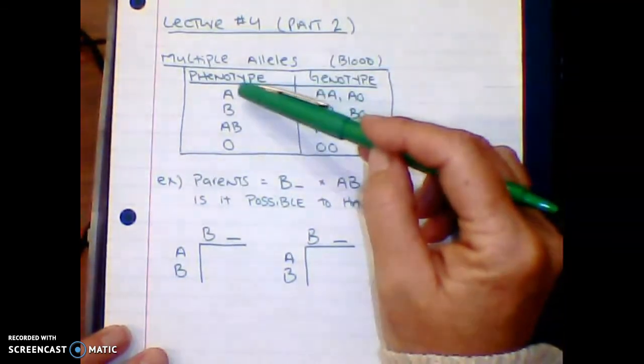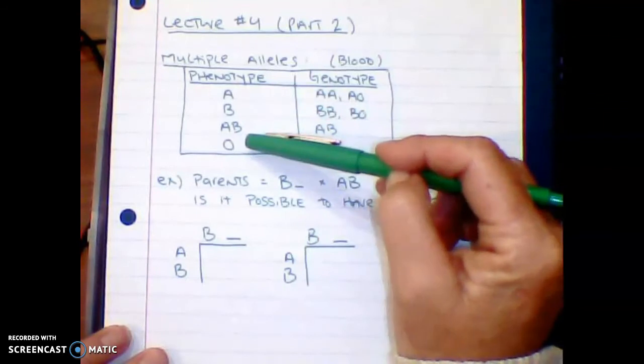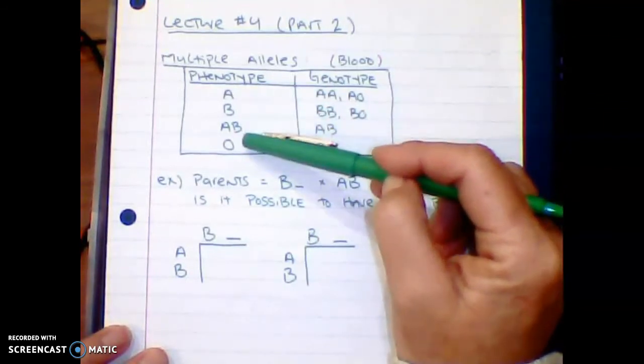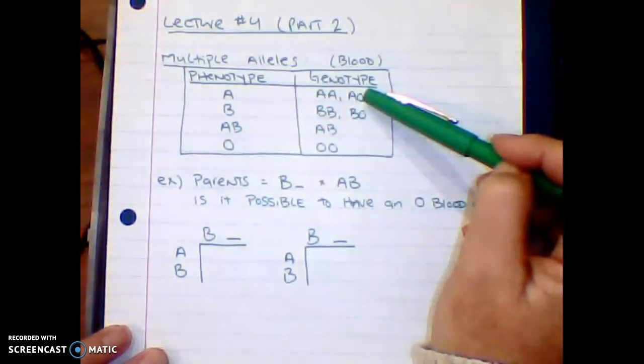Now, as a reminder, blood, we have four different phenotypes: A, B, AB, and O. But genetically, keep in mind, if you have A blood, genetically you can be either AA or AO.